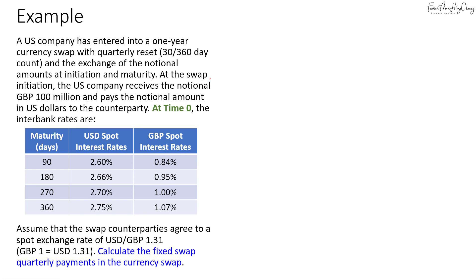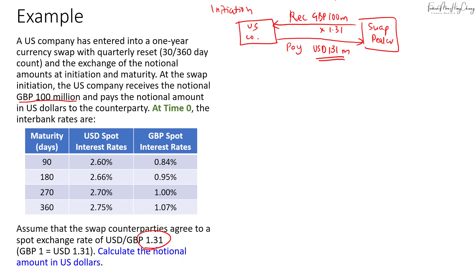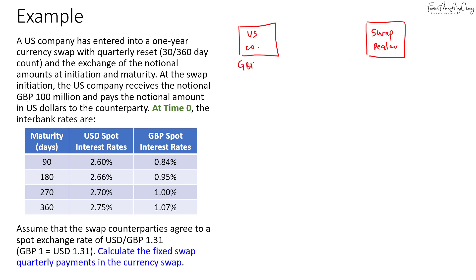To calculate the fixed quarterly payments, we need to determine who pays what. The US company is holding 100 million pounds, while the swap dealer is holding the 131 million dollar notional. Whoever is holding a currency pays interest in that currency. So the US company pays interest in pounds to the swap dealer, while the swap dealer pays interest in US dollars — meaning the US company receives USD interest each quarter.